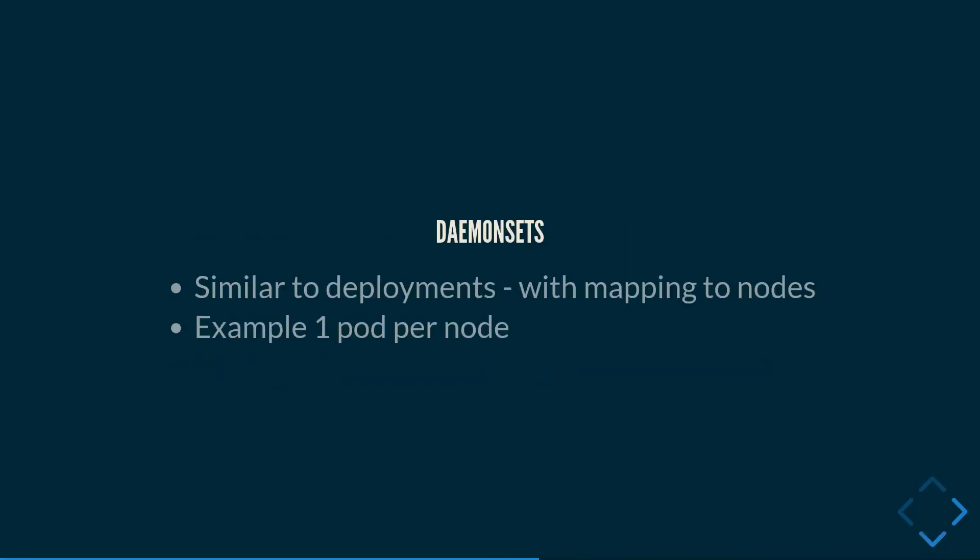Sometimes you don't necessarily want to run multiple pods on a node, or you want more control over the way pods are scheduled. That's where we have a concept called daemon sets. It's similar to deployments, but it allows you to define one pod to run per node. For example, there might be no use running three web servers on a single node. With daemon sets, you could run a three-replica pod across three nodes, where each node runs exactly one pod.